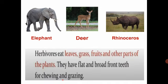Herbivores eat leaves, grass, fruits and other parts of plants. They have flat and broad front teeth for chewing and grazing.